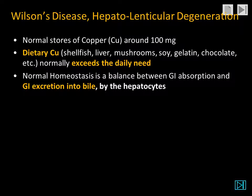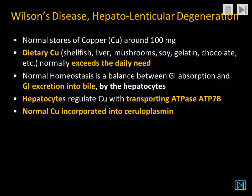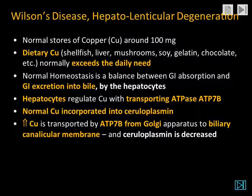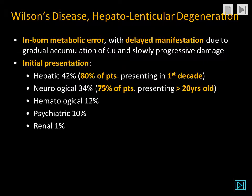Normal homeostasis is a balance between gastrointestinal absorption and gastrointestinal excretion into bile, which is formed by the hepatocytes. The hepatocytes regulate copper with the transporting ATPase, ATP7b. Normal copper is incorporated into ceruloplasmin. Elevated copper is transported by ATP7b from the Golgi apparatus to the biliary canalicular membrane where it is excreted into the bile. This is an inborn error of metabolism but it usually has a delayed manifestation due to the gradual accumulation of copper and toxicity, which is slowly progressive.